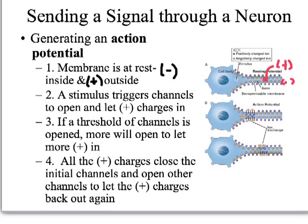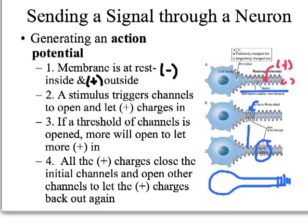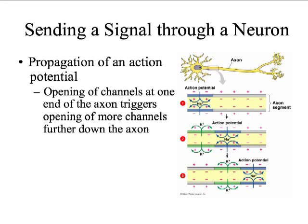These channels opening and closing run the length of the axon. We can see in the picture that at resting potential, when a stimulus is received, channels open letting positives in, and then more channels along the cell open up. We get this spread down the axon of channels opening and letting positive charges in. As soon as a bunch of positive charges goes in, those channels close and the next ones down the line open up. This spreading of the action potential down the axon is called propagation of an action potential.